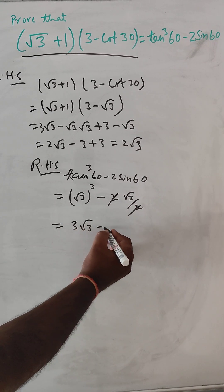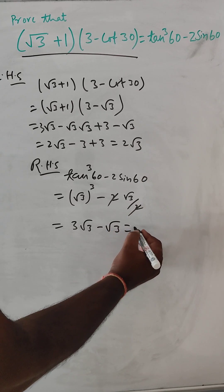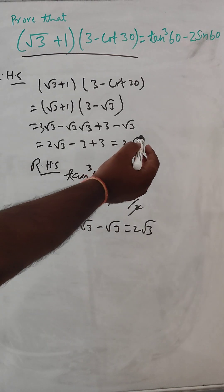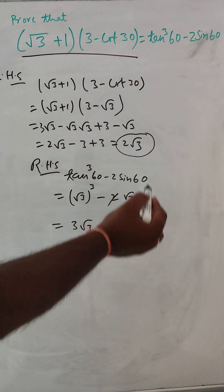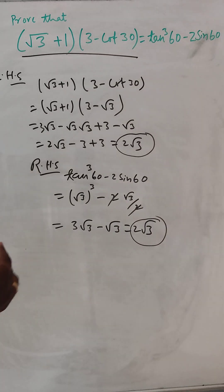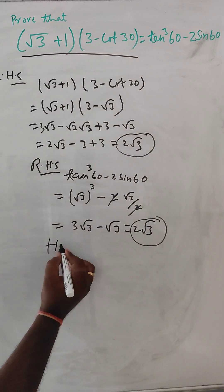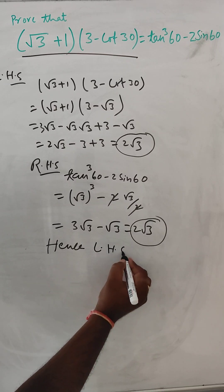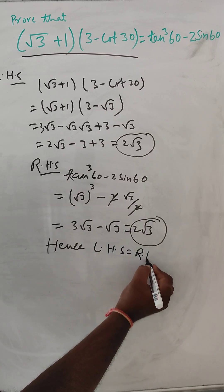So 3 root 3 minus root 3 is equal to 2 root 3. So here LHS and RHS value both are same. Hence we can write LHS is equal to RHS.